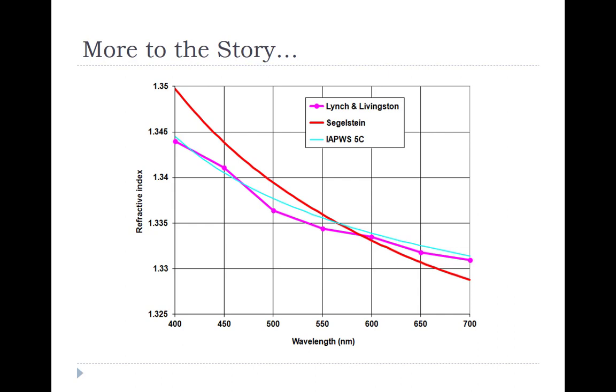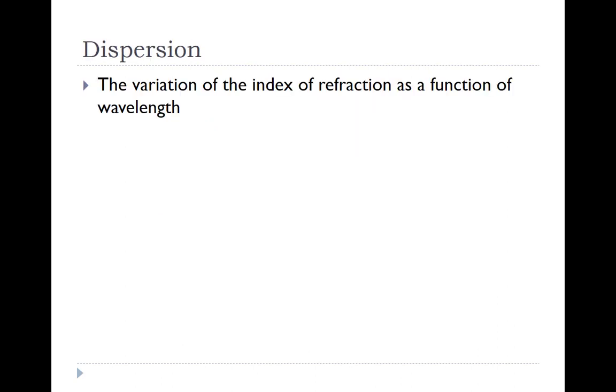For most materials, this sort of behavior, where it's higher in the blue and lower in the red, is typical. It's not always the case, but this is typical behavior. So again, dispersion is the variation of the index of refraction as a function of wavelength.